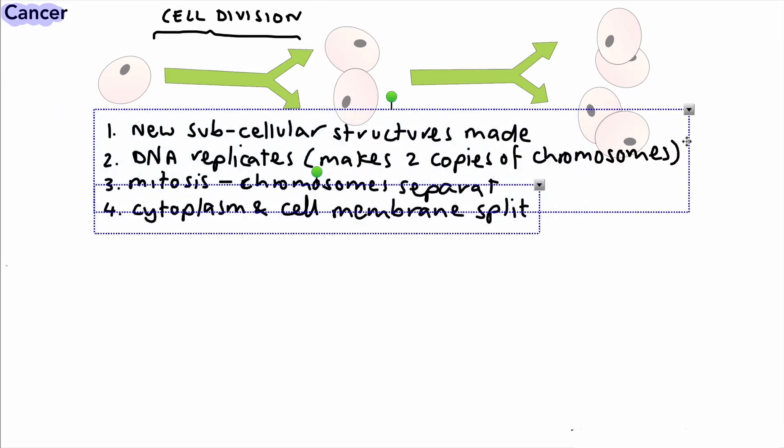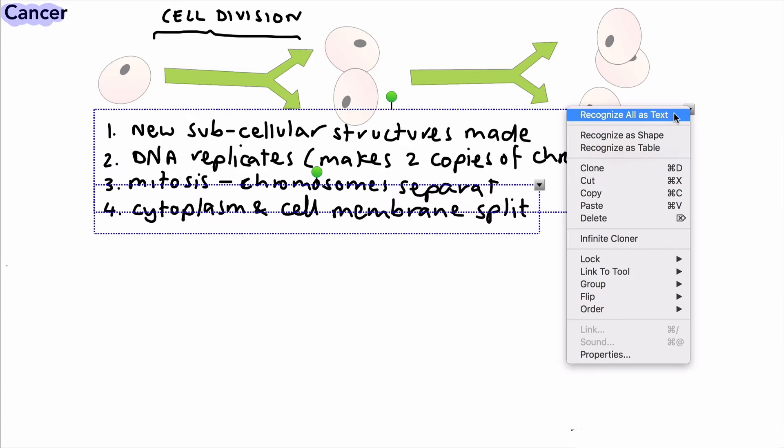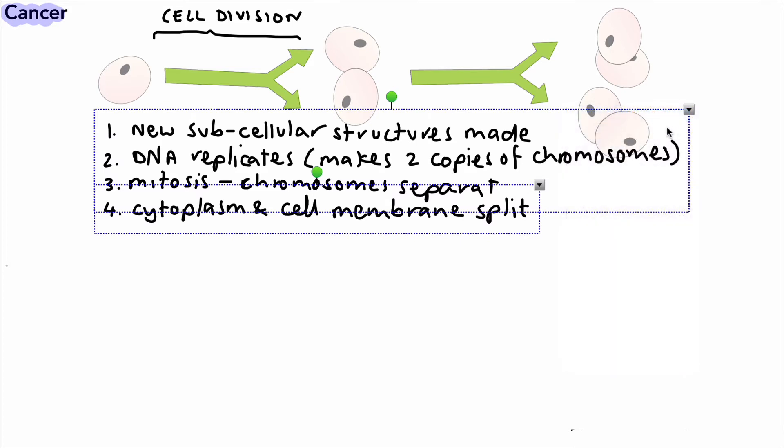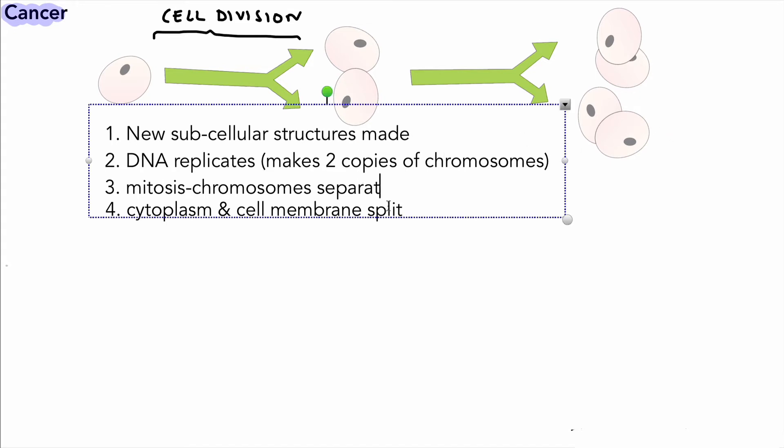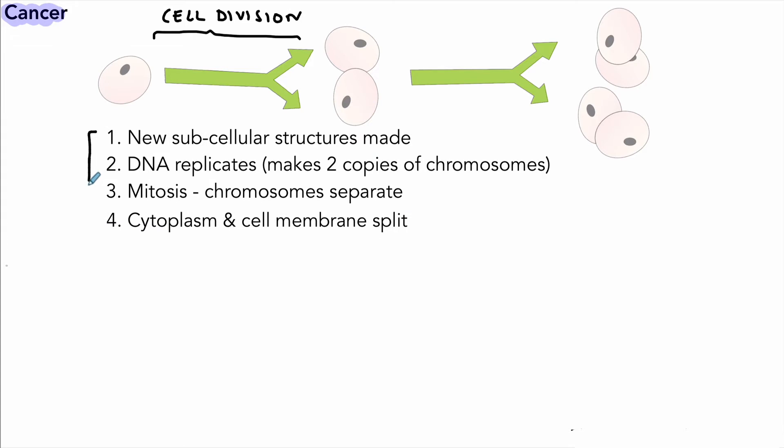Now we could probably tidy up that handwriting a little bit, see if this can recognize it as text. Will it do it? Awesome, good. Right, so there it's tidied up a little bit. We just need to add the E back to separate, the letter, not the qualification.